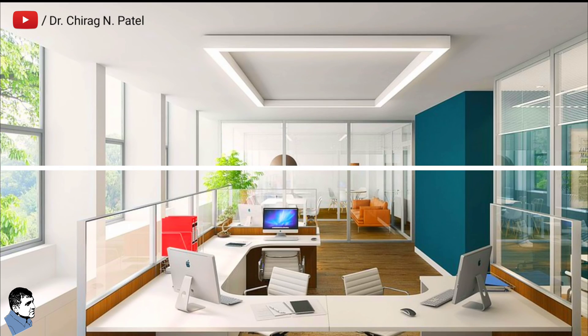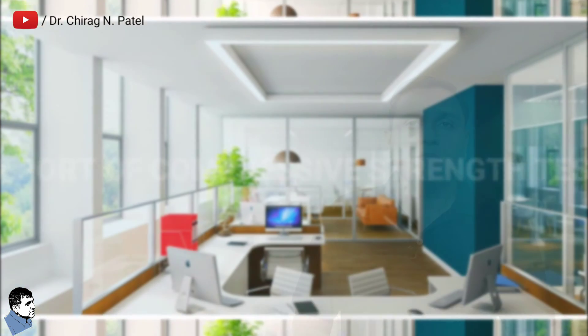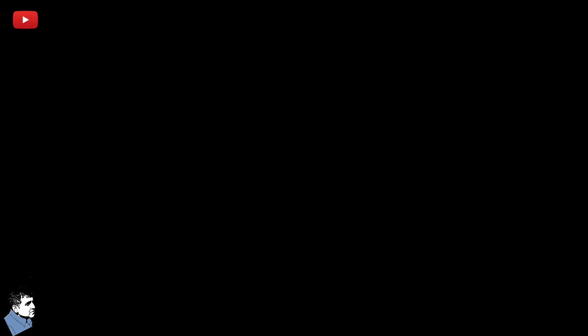No edge correction should be used in the interpretation of the strength of the cores. The test data should be recorded in the standard proforma for reporting of the strength; the test report includes important data as shown on the screen. Throughout the world, core testing is an acceptable method for the determination of strength and quality of concrete in a structure.